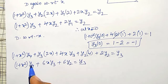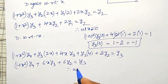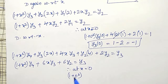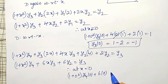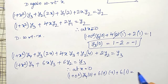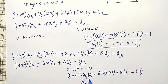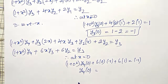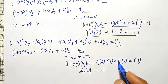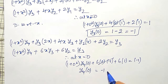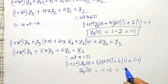Substituting x = 0: (1 + 0)·y4(0) + 6·0·y3(0) + 6·y2(0) = y3(0). So y4(0) + 6·1 = −1, giving y4(0) = −1 − 6 = −7.